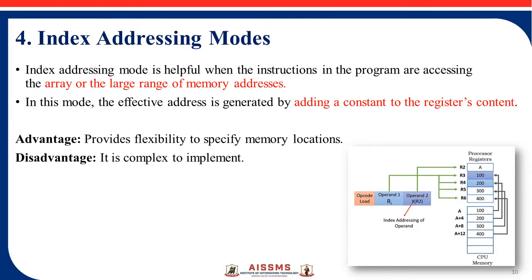The next is index addressing mode. In the example, LOAD R1, X(R2) — at R2, the information stored is A, which is an address. At address A, the value 100 is stored, so 100 is moved to R1. Then it increments to the next location — A plus 4, where 200 is stored, so the next value 200 is stored. So basically they store the index of a particular location or address. Here X(R2) stores A, and A is the index of the next memory.